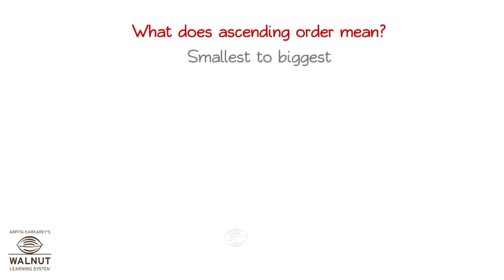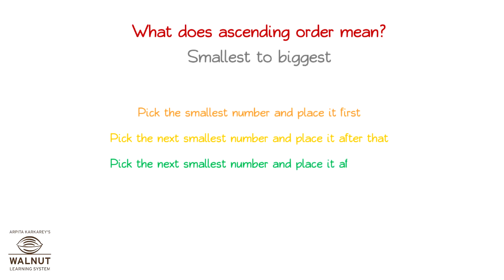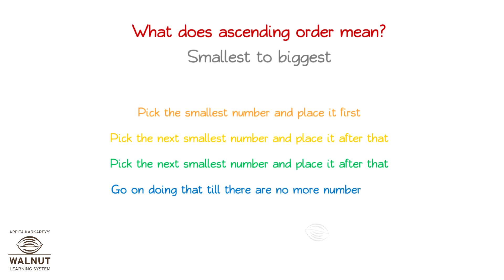When we have to arrange numbers in ascending order, what do we do? These are the steps to follow. Pick the smallest number and place it first. Pick the next smallest number and place it after that. Go on doing that till there are no more numbers left.